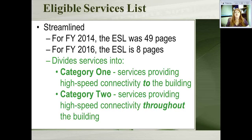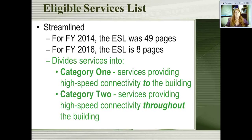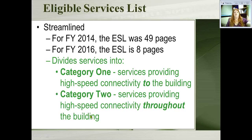Services are divided into Category 1 and Category 2 — previously called Priority 1 and Priority 2. Category 1 covers all services bringing connectivity to your library building: your monthly phone bill and monthly internet service bill — getting the connection to your building. Category 2 covers everything once you've got that service: getting it out to all your devices — wiring, networks, servers, routers to get broadband out to the computers in the library. Think of Category 1 as outside the walls getting the connection in, and Category 2 as everything inside your walls.